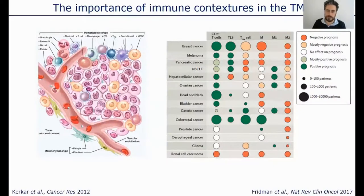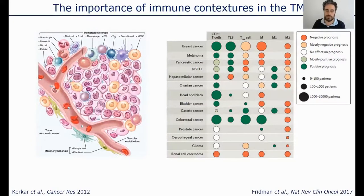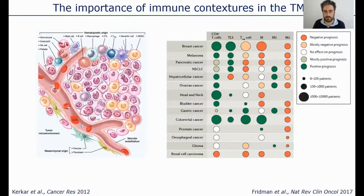So why focus on cancer microenvironments and in particular the immune cell component of cancer microenvironments? It is now well accepted that the quantitative and qualitative composition of the immune cell compartment in the tumor is a major determinant of clinical behavior, with the presence of different immune cells being associated with either improved or worse clinical outcomes, depending on which immune cell subset you're looking at.